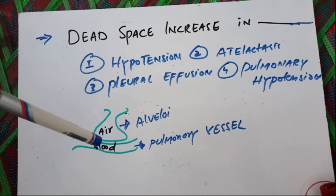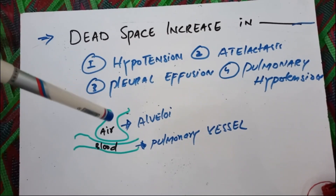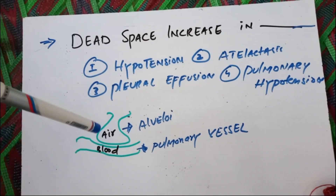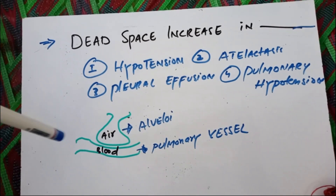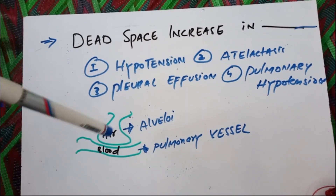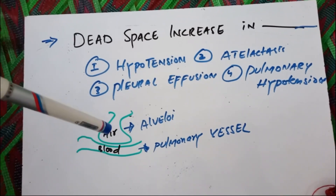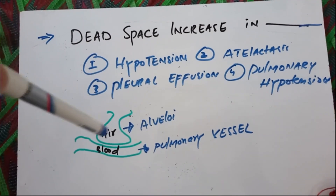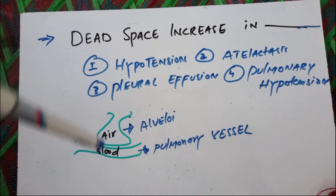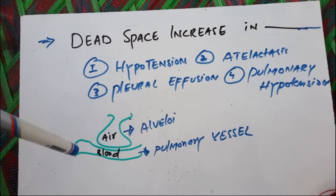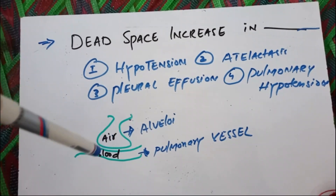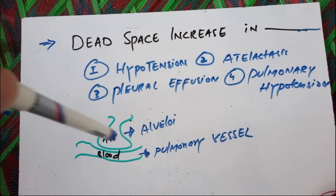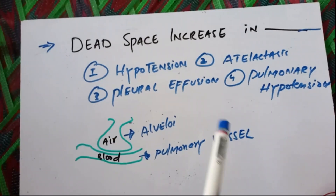The amount of gaseous exchange is decreased by two ways: either the air coming to the alveoli is less, or the blood coming to the vessel is less. So if the blood coming to the pulmonary vessel is less, there will be less gaseous exchange. If there is less gaseous exchange, the amount of air in the alveoli remains high — that air does not take part in gaseous exchange. More air not exchanged means increased dead space.